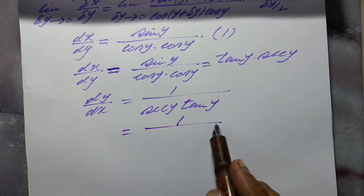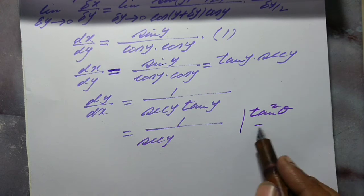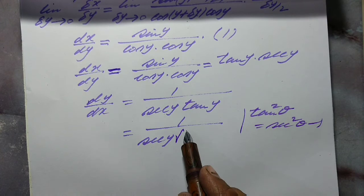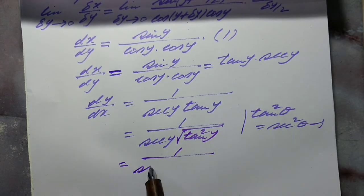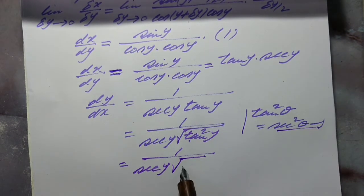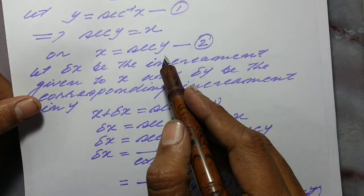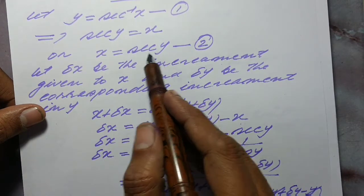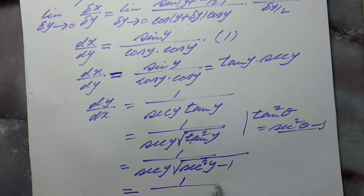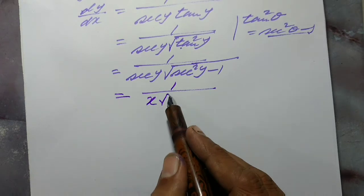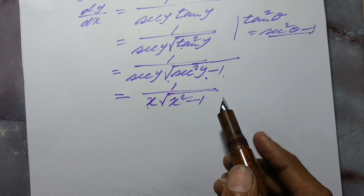As we know, tan squared theta equals sec squared theta minus 1, so we may write tan y as under root of (sec squared y minus 1). From equation 2, sec y equals x, so replacing sec y by x, dy upon dx becomes 1 upon x into under root (x squared minus 1).